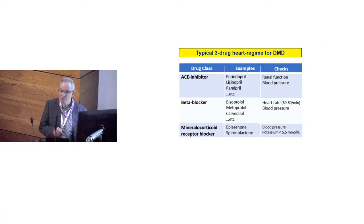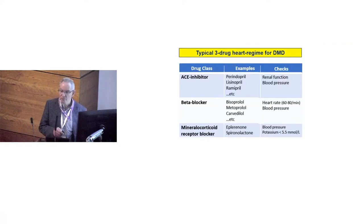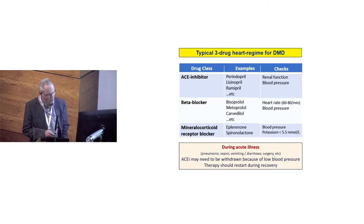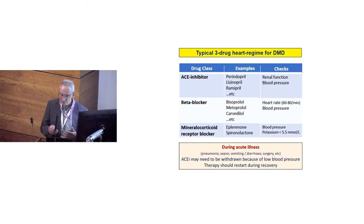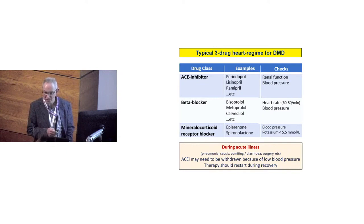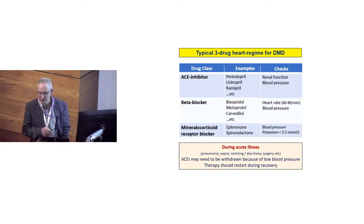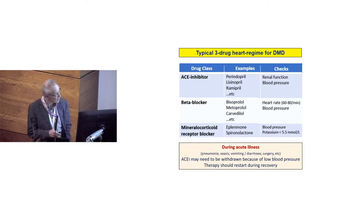Typically, a boy with Duchenne from before age 10, or earlier if there's any evidence of cardiac dysfunction, will be on a triple treatment regime. One key element: if the Duchenne boy is admitted with an acute illness — pneumonia, fractured femur — someone will inevitably say the blood pressure is very low and stop the treatment. That's appropriate at the time, but it doesn't mean treatment shouldn't restart again as soon as recovery is underway.